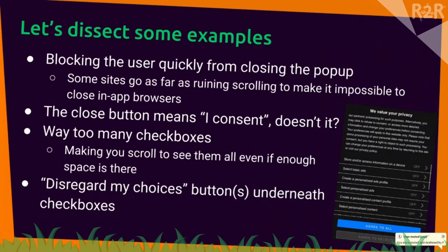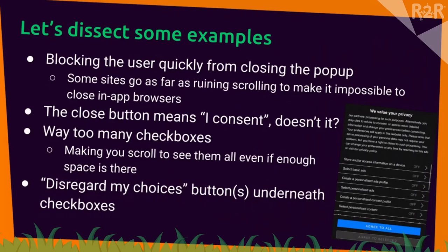There are also way too many checkboxes. In one example, there's a small individual scrollable frame containing all the checkboxes, so you always have to scroll to see every single thing you might want to change. And there's a wonderful 'disregard my choices' button underneath — so after going through all 400 checkboxes and saying no to every single one, you accidentally hit 'accept all' and suddenly your choices aren't worth anything.